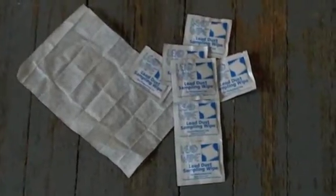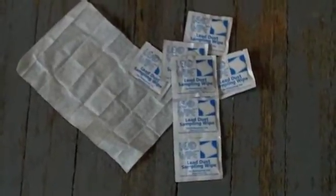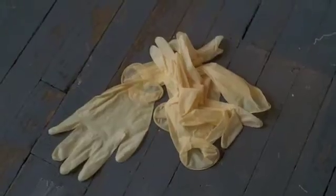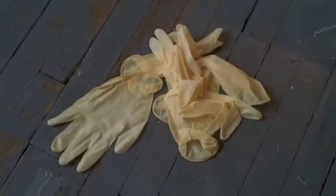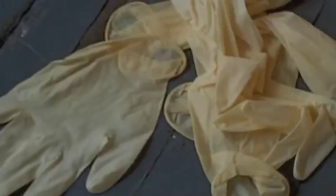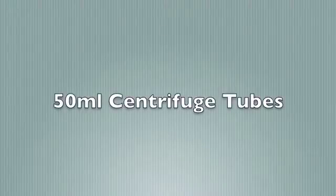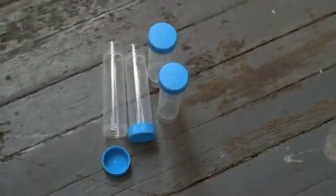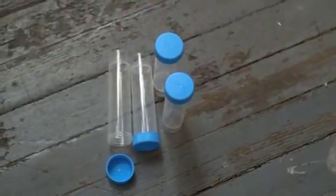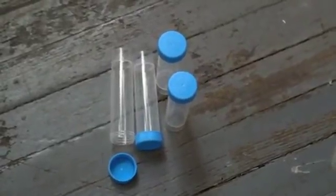The wipes are manufactured specifically for lead dust testing. It's an individually packaged pre-moistened wipe that is designed to satisfy an ASTM standard for this testing. The gloves are typically disposable latex, although latex-free gloves are also acceptable as long as what you use is non-powdered and non-sterilized. Sample containers, or centrifuge tubes, are hard plastic, non-glass containers. They should be non-sterilized plastic tubes equipped with a sealable lid and are typically 50 milliliters in size.